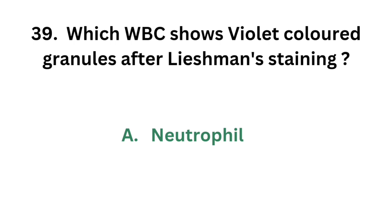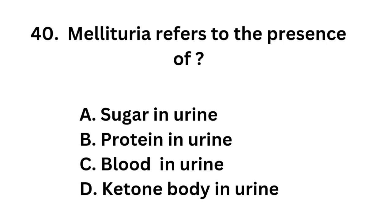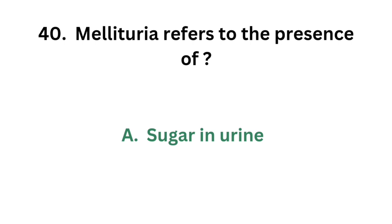Neutrophil shows violet colored granules after Leishman's staining. Question number 40: Melituria refers to the presence of. Option A: Sugar in urine. Option B: Protein in urine. Option C: Blood in urine. Option D: Ketone body in urine. The correct answer is option A: Sugar in urine. Melituria refers to the presence of sugar in urine.